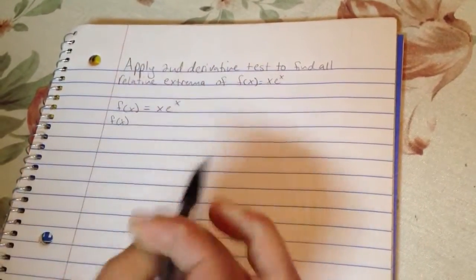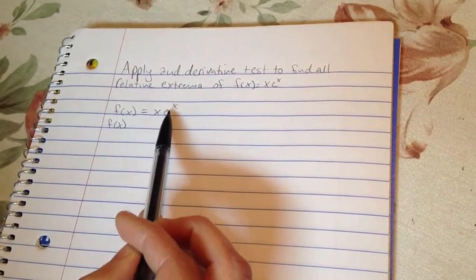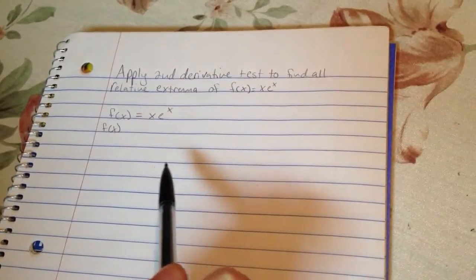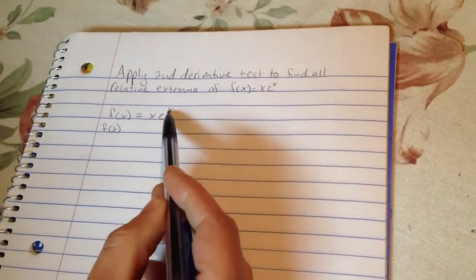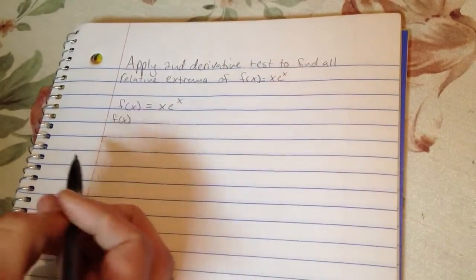The thing to remember here, we're using product rule and we also have an exponential here. So the derivative of that is just simply e to the x times the derivative of the first, or not of the first, but of the exponent itself, which in this case is 1.